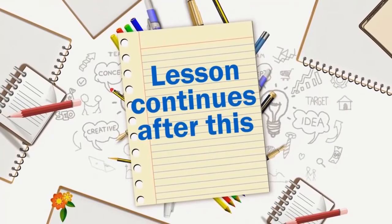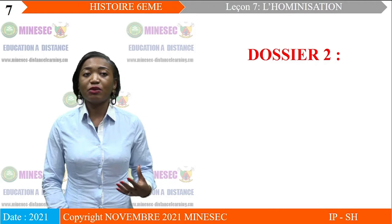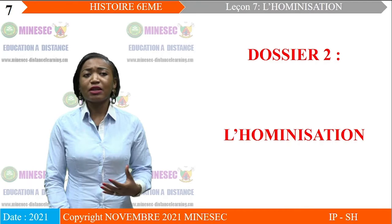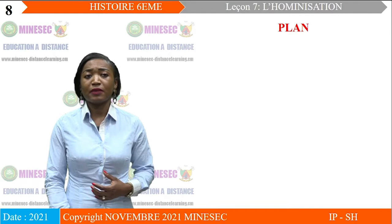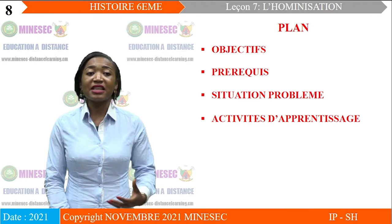Nous allons poursuivre avec l'unité d'apprentissage du jour. Il s'agit de la leçon 7 qui est en fait un dossier intitulé « L'hominisation ». Cette leçon va s'articuler sur un plan bien précis comportant les éléments suivants : les objectifs, les prérequis, la situation problème, les activités d'apprentissage, l'évaluation et enfin le devoir. Notre plan a six articulations.